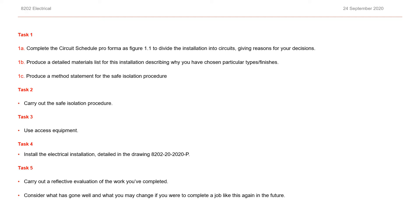They'll also have to provide a method statement for the safe isolation procedure. Task two would require them to carry out the safe isolation procedure. Task three would require them to use two types of access equipment. Task four would be the major electrical installation. And then task five, which must always be carried out at the end, would require candidates to carry out a reflective evaluation of the work they've completed. They need to consider what has gone well or what they may change if given the chance to carry out the assessment again.